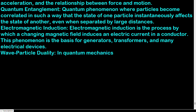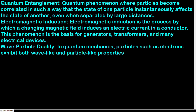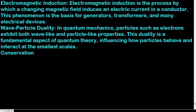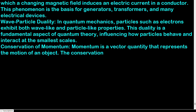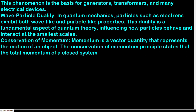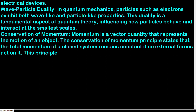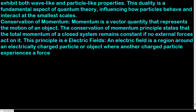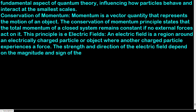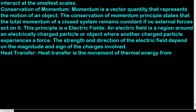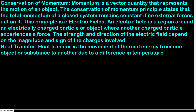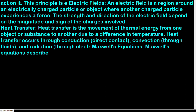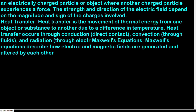Wave-particle duality: in quantum mechanics, particles such as electrons exhibit both wave-like and particle-like properties. This duality is a fundamental aspect of quantum theory, influencing how particles behave and interact at the smallest scales. Conservation of momentum: momentum is a vector quantity representing the motion of an object. The conservation of momentum principle states that the total momentum of a closed system remains constant if no external forces act on it. Electric fields: an electric field is a region around an electrically charged particle where another charged particle experiences a force. The strength and direction of the field depend on the magnitude and sign of the charges involved. Heat transfer: the movement of thermal energy from one object to another due to a difference in temperature, occurring through conduction, convection, and radiation.